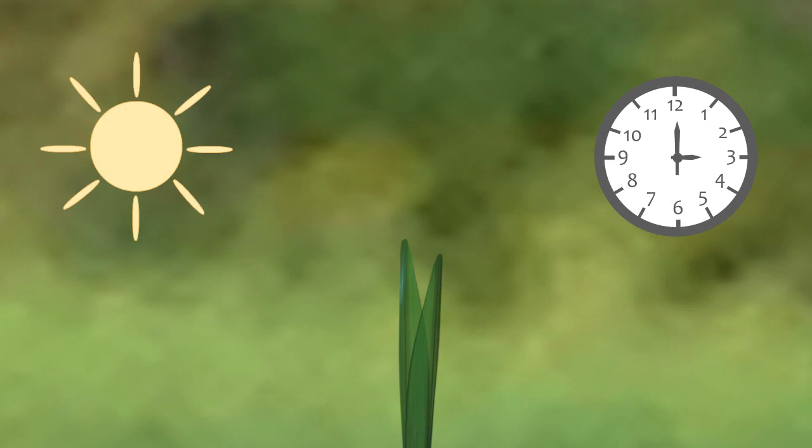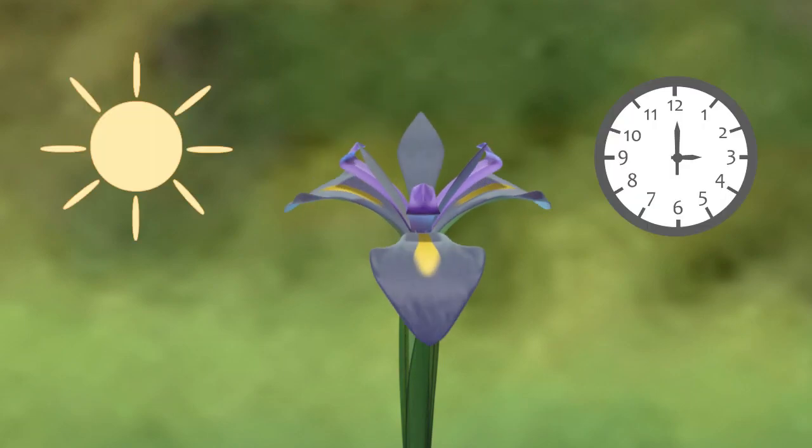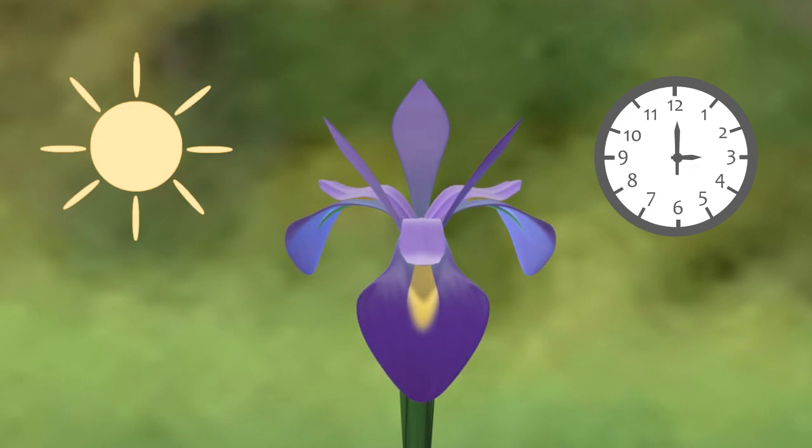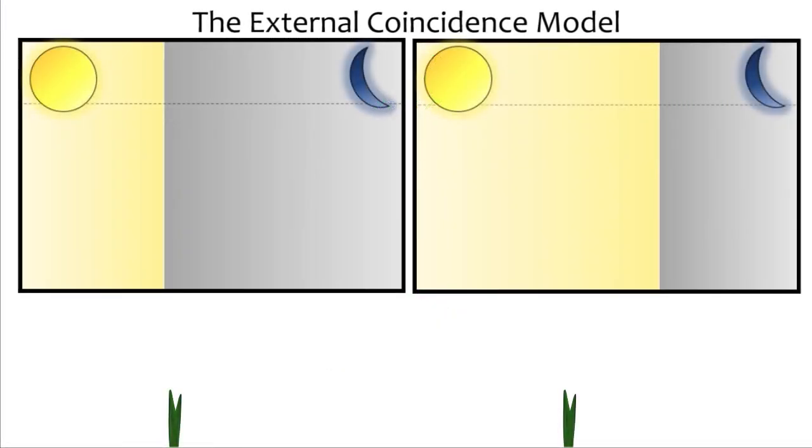For flowering to be triggered, both signals need to happen at the same time. We say that they coincide. We understand this situation best in the case of a long day plant called Arabidopsis thaliana, in which the coincidence of light and clock signaling are important in the late afternoon to early evening. Here is a scenario in which the coincidence happens and triggers flowering in long day conditions. The circadian clock causes the abundance of some proteins to go up and down every day with a repeating rhythm. Some of these proteins are critical for flowering.